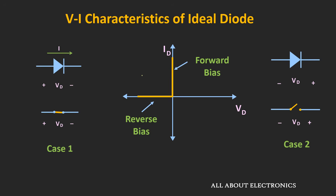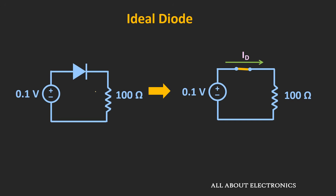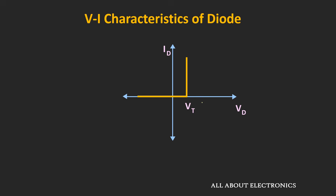If you look at the VI characteristic of the ideal diode, even a very small positive voltage between the anode and cathode causes it to start conducting. But in an actual diode, it will start conducting only after the applied voltage crosses some threshold voltage. Looking at the actual VI characteristic, up to a certain threshold voltage the diode will not allow any flow of current, and only after the applied voltage crosses this threshold voltage will the diode allow current to flow.